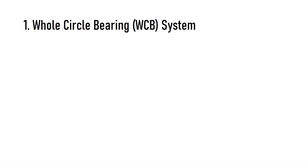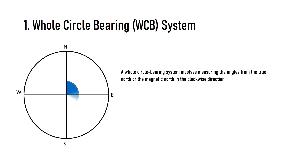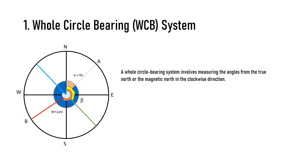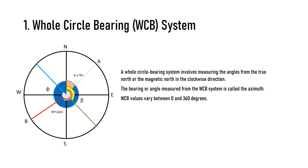The Whole Circle Bearing (WCB) system involves measuring angles from the true north or magnetic north in the clockwise direction. The bearing or angle measured in the WCB system is called the azimuth. As shown in the figure, the azimuth of line OA is measured from the north giving a value of 60 degrees, and that of OB is 220 degrees.